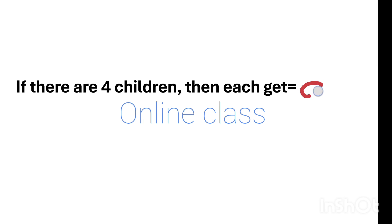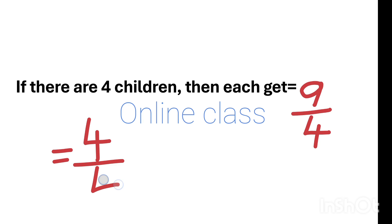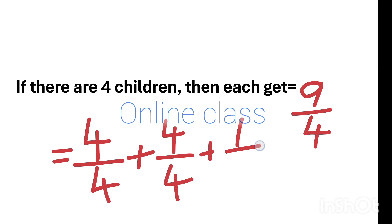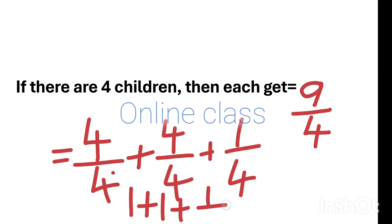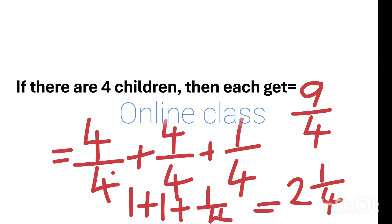It is called 9 by 4. We will do this using the normal formula. 9 by 4 is 4 by 4 plus 4 by 4 plus 1 by 4. That is 1 plus 1 plus 1 by 4, which equals 2 and 1 by 4.